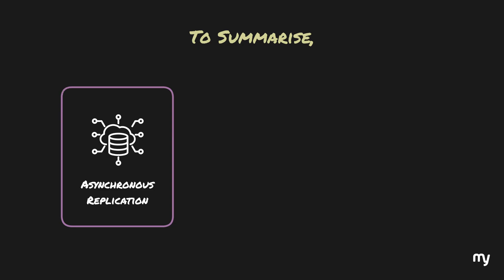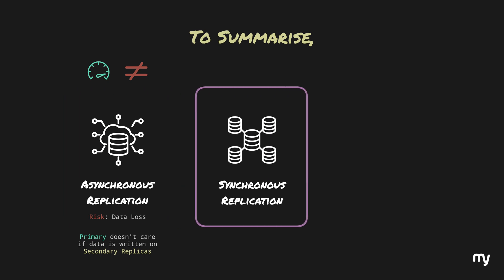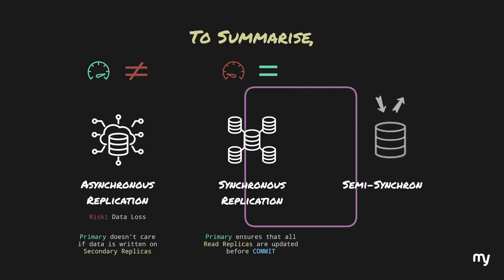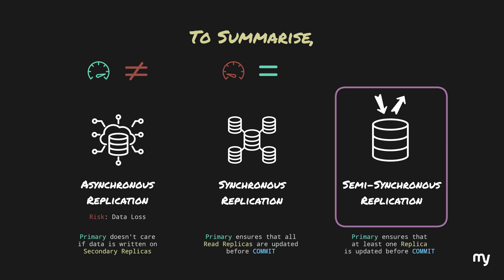To summarize the three approaches: with asynchronous replication, the primary writes data and doesn't wait for read replicas to be updated — speed is prioritized at the cost of consistency and a potential risk of data loss. With synchronous replication, the primary ensures all read replicas are updated before committing the transaction — it sacrifices speed for immediate consistency, making it ideal for banking, payment, and financial applications where data integrity is crucial. And with semi-synchronous replication, at least one replica is updated with the latest changes — it minimizes data loss, provides better speed than synchronous, but may result in temporary inconsistency, making it suitable for applications like Instagram and X where eventual consistency is acceptable.